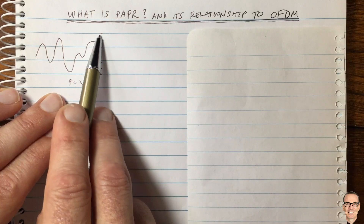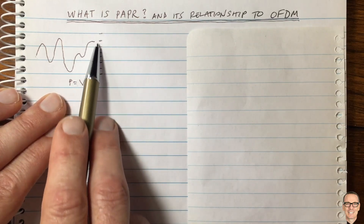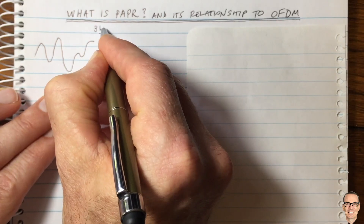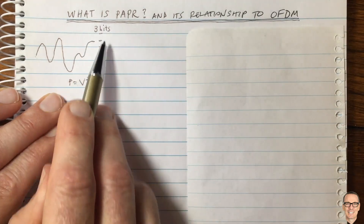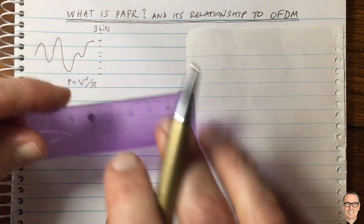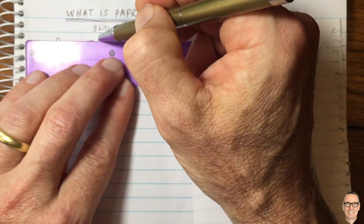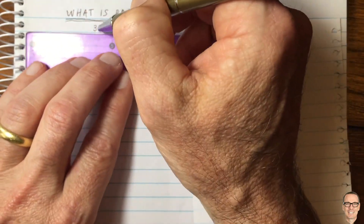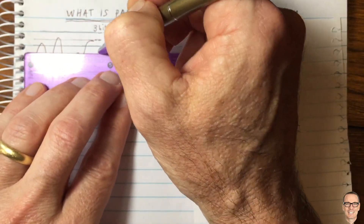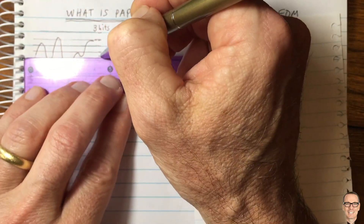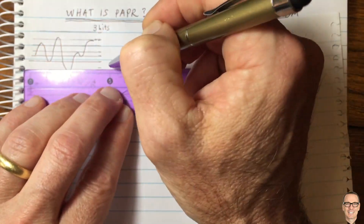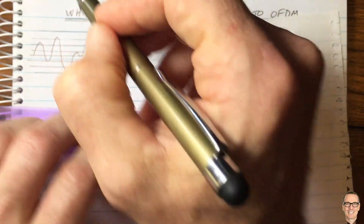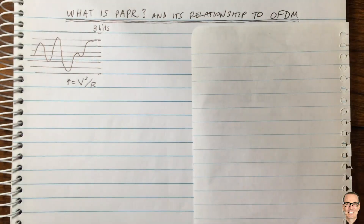Now let's consider what we have to do when we digitize this signal. Here I've drawn eight levels, which would be represented by three bits if we were to store it in a computer — three bits gives you eight levels. It's going to be important to think about why the peak-to-average power ratio is important for any signal, and more importantly afterwards, for OFDM.